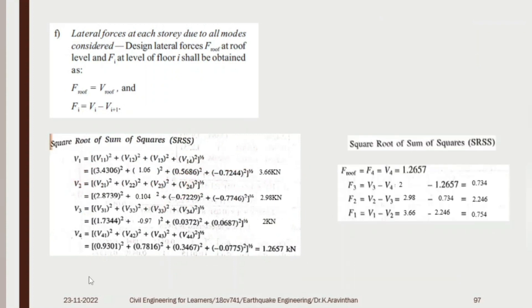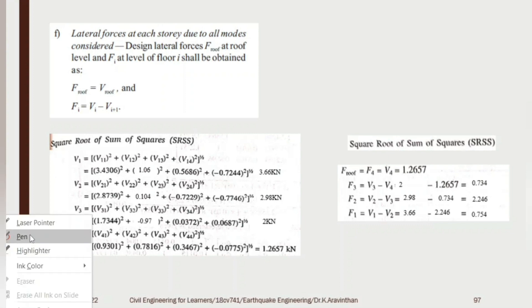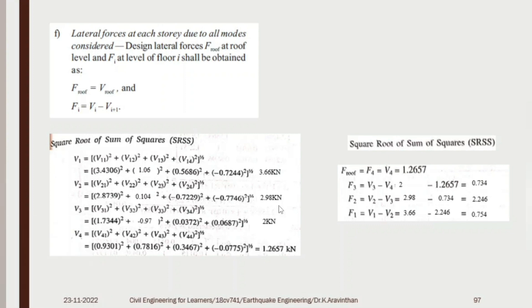The final lateral force at roof level from SRSS is 1.26 kN. Subtracting successive story shears gives the lateral force at each story; for example, 2.246² combined with 0.754² gives the design lateral force at that floor level.